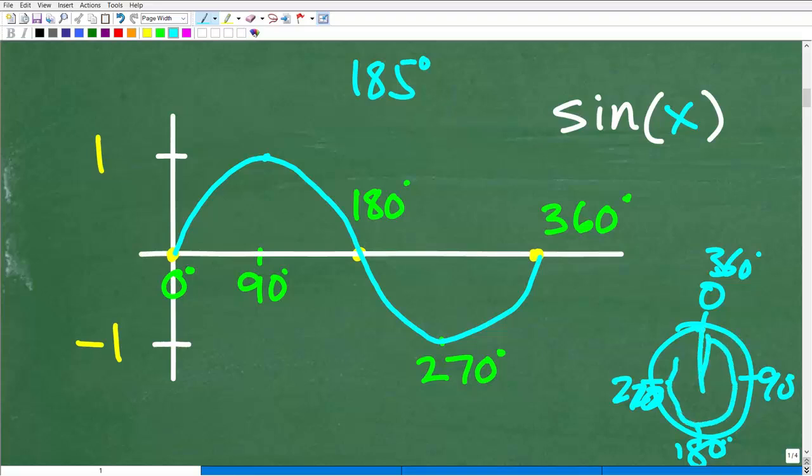So as this angle goes around here are the various values that are going to be produced so at zero the sine of zero degrees is zero. Now as the graph goes up the sine of 90 degrees is positive one, all right, so here's one right here. So this is what we call the amplitude, okay this graph is going to be bouncing between one and negative one. So at 90 degrees the value of sine, okay if you went into your calculator and went sine of 90 degrees, make sure your calculator is in degree mode, you'll see that the answer is one.